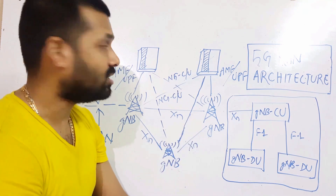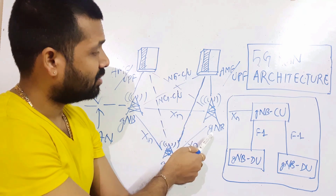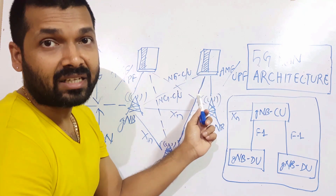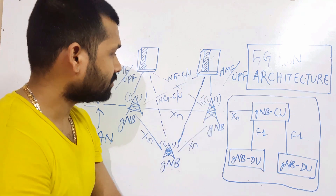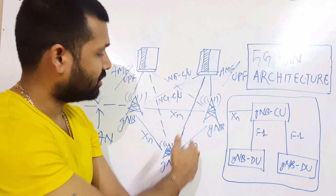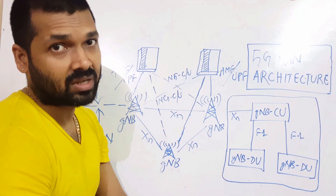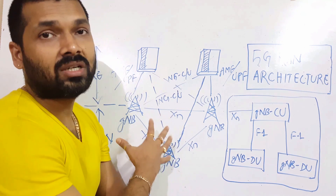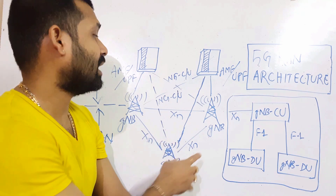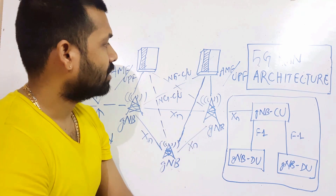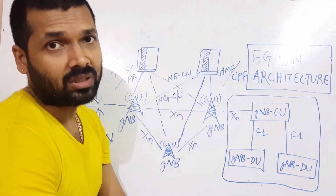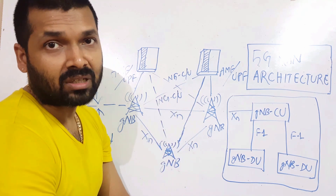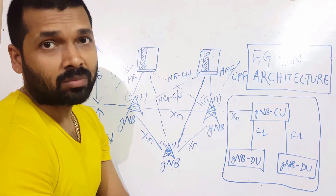The core part in 5G is called NGC — New Generation Core, or 5G Core. Below gNodeB we have the UEs and connected devices, and the overall radio access network is called NG-RAN — Next Generation RAN. So in 5G we use the terms NG-RAN, NG Core, and gNodeB, which reflects the new naming nomenclature in 5G.